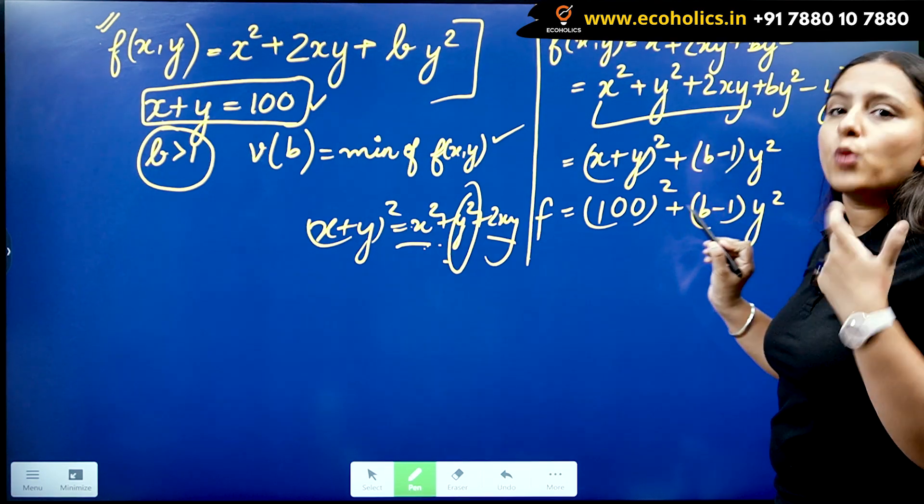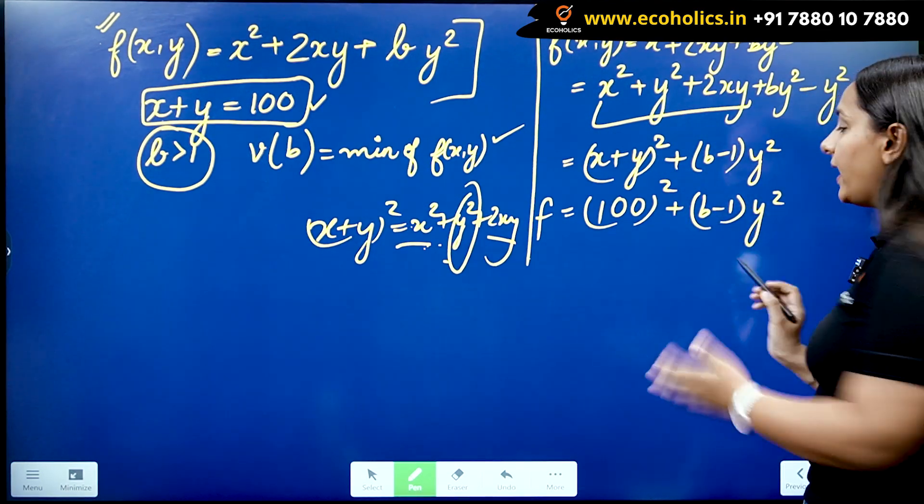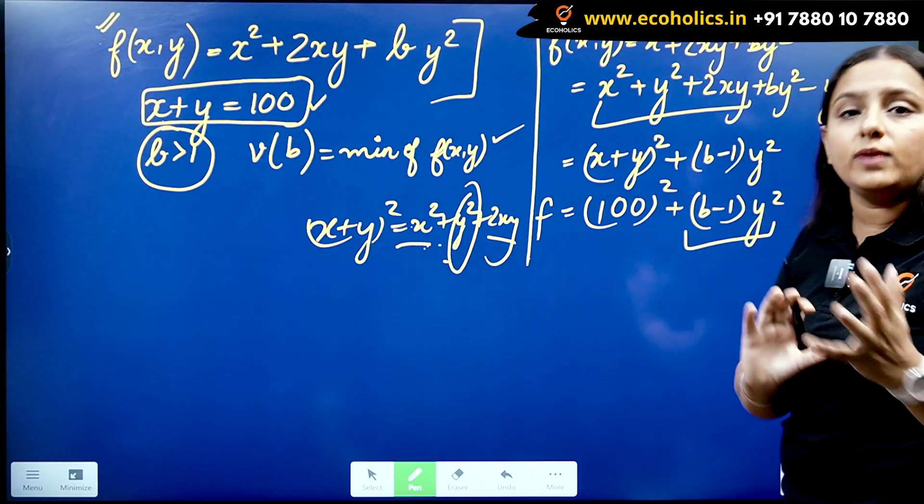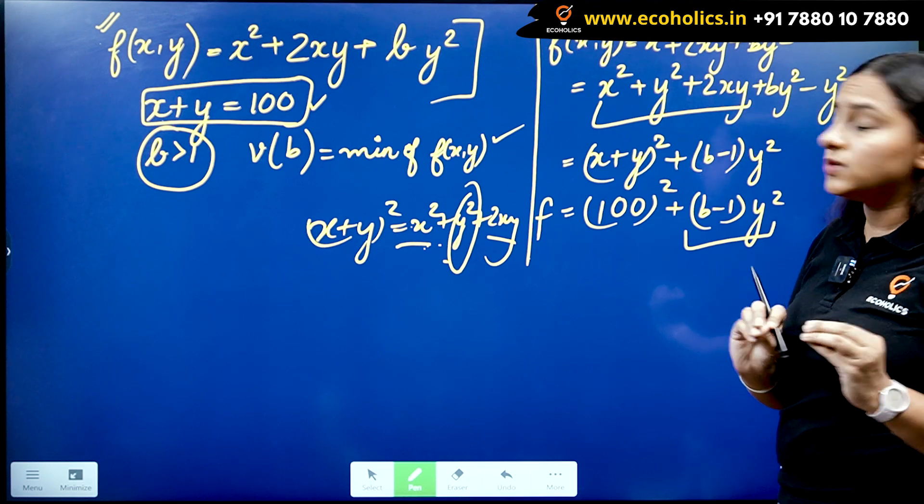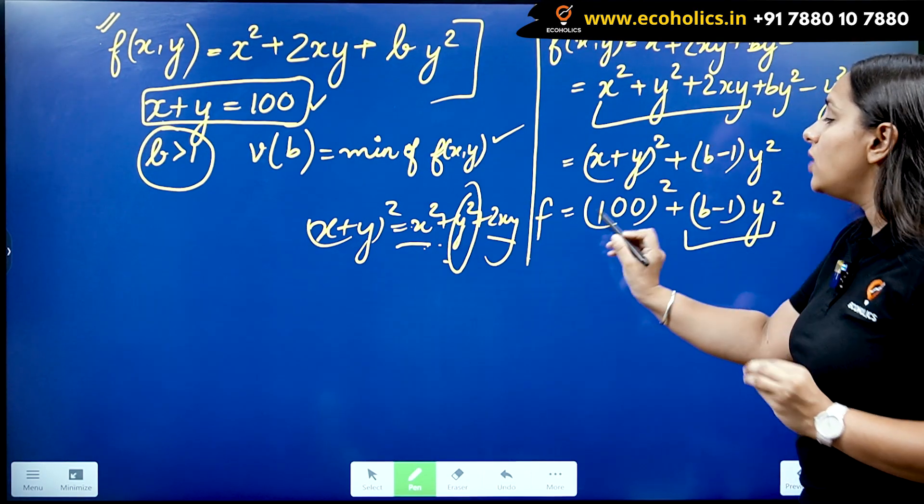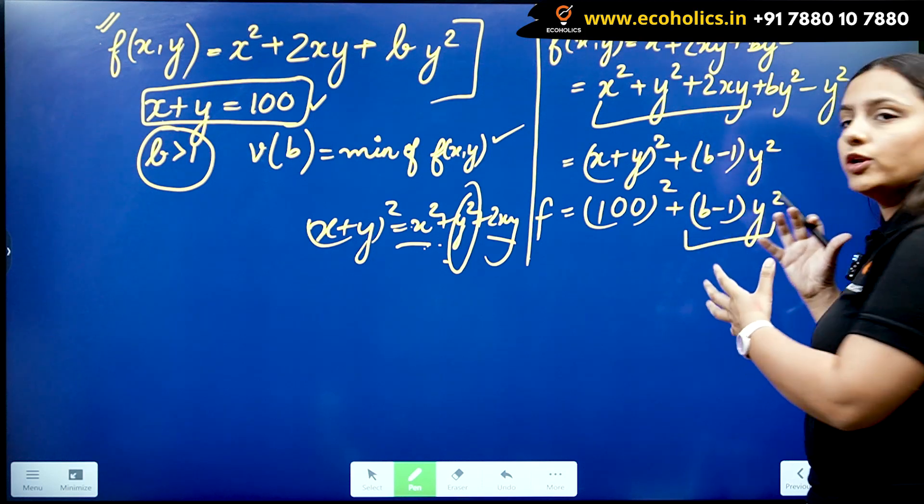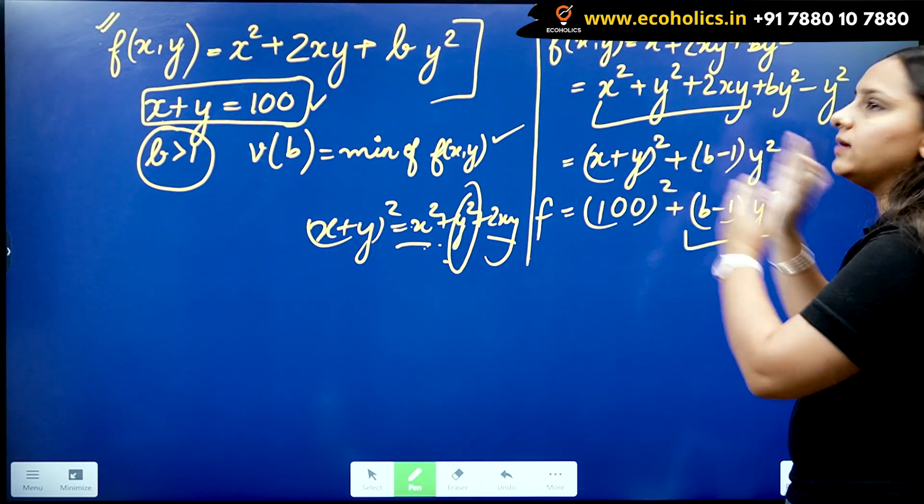So 1.1 - 1 is going to be 0.1, and even if whatever is the value of y, I'm going to have a positive value, even if it is going to be little, but I'm still going to have some positive value over here.